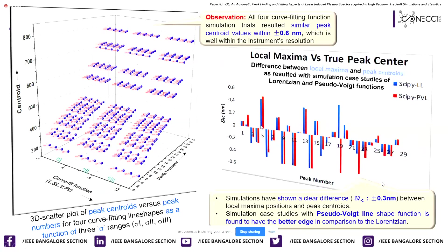The blue bars represent the difference between local maxima positions obtained from scipy and the true peak center values resulting from the Lorentzian function, whereas the red color bars represent the difference between local maxima and true peak centers of the pseudo-Voigt line shape function. As seen in this plot, regions showing minor differences are due to narrow intense peaks, while regions showing large differences are due to broad and low-intense peaks of the spectrum. Trade-off simulations on other sample spectra indicated the better performance of the pseudo-Voigt line shape function in comparison to Lorentzian.